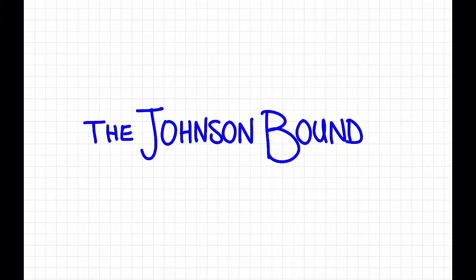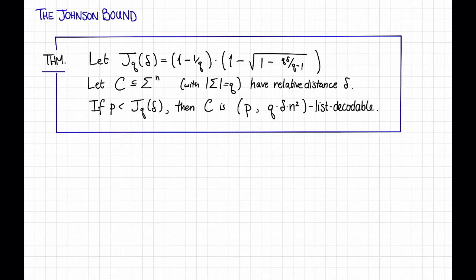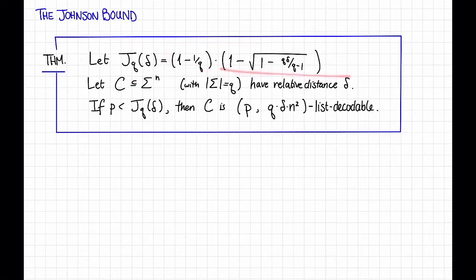In this video, we'll see the Johnson bound, which states that any code with good distance is decently list decodable. Here's what the Johnson bound says. Let j sub q of delta be equal to 1 minus 1 over q times 1 minus the square root of 1 minus q delta divided by q minus 1. Now let C be a subset of sigma to the n, a code with alphabet size q that has relative distance at least delta.